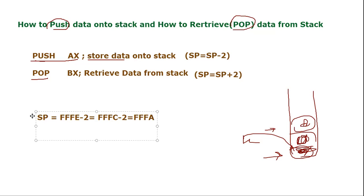Similarly, when popping a value, the stack pointer is incremented by two. For example, if the stack pointer is at 0x0100, after a pop it becomes 0x0FFE. That is, the stack pointer increments by two on each pop. We will observe this in the 8086 emulator. Let's go and see that program.